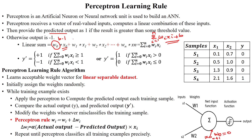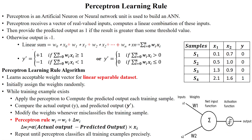The perceptron predicts the output using a threshold value, chosen based on the given desired output. It outputs 1 if the result is greater than the threshold; otherwise it outputs 0 or -1. Here, -1 and 0 represent the negative class and +1 represents the positive class. So the predicted output y' equals +1 whenever the linear combination is greater than or equal to the threshold, and the negative class whenever it is less than the threshold.